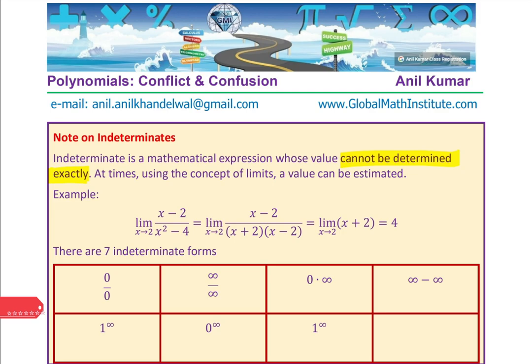And keyword: exactly. Means it can be approached. So the idea here is that you cannot find the exact value, but you can kind of estimate. That is what indeterminate could be. At times, using the concepts of limits, a value can be estimated. And here is an example.